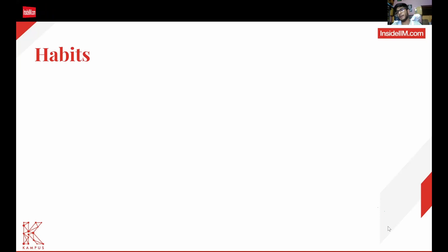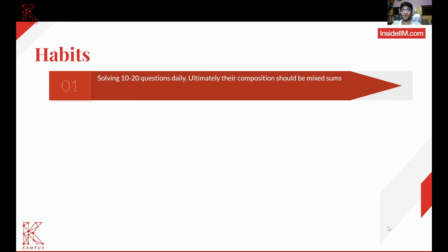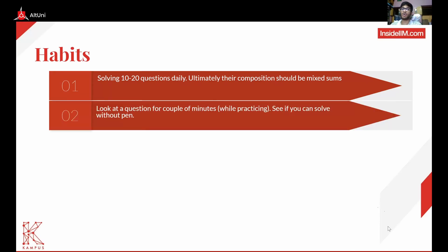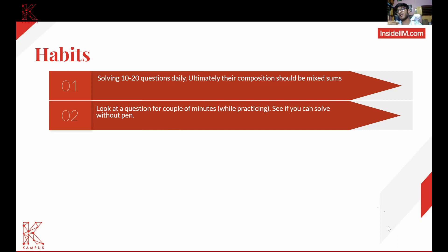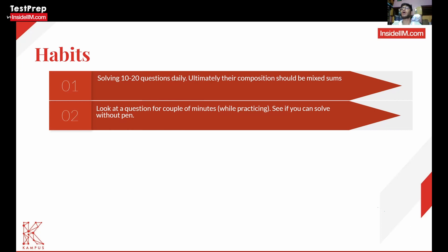Develop habits from day one. Consistency is the key to cracking CAT. Daily solving adds huge advantage — solving 20 questions daily adds far more value than doing 120 on a weekend. QUANT comes in the last section of the paper, when your brain is already drained from VARC and DILR. So practice QUANT when you're mentally tired — just came from work or after something rigorous — to get a hang of how your brain and body will perform.